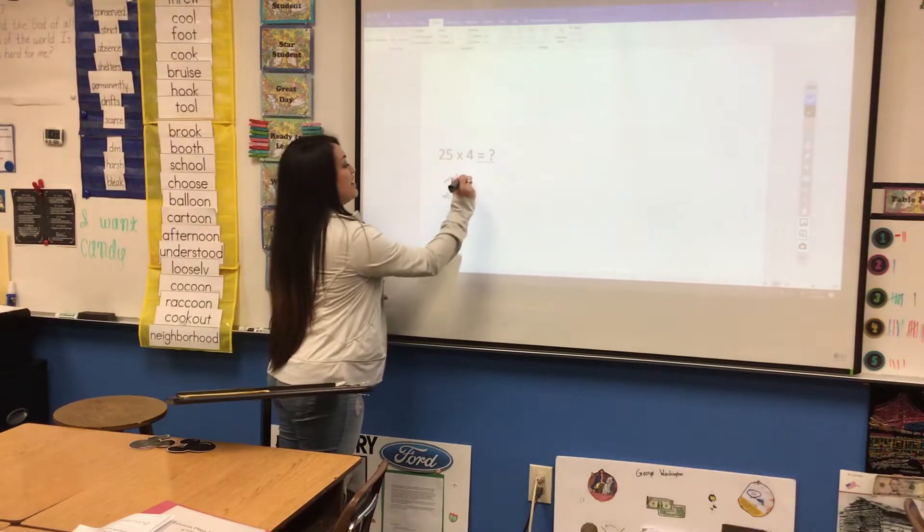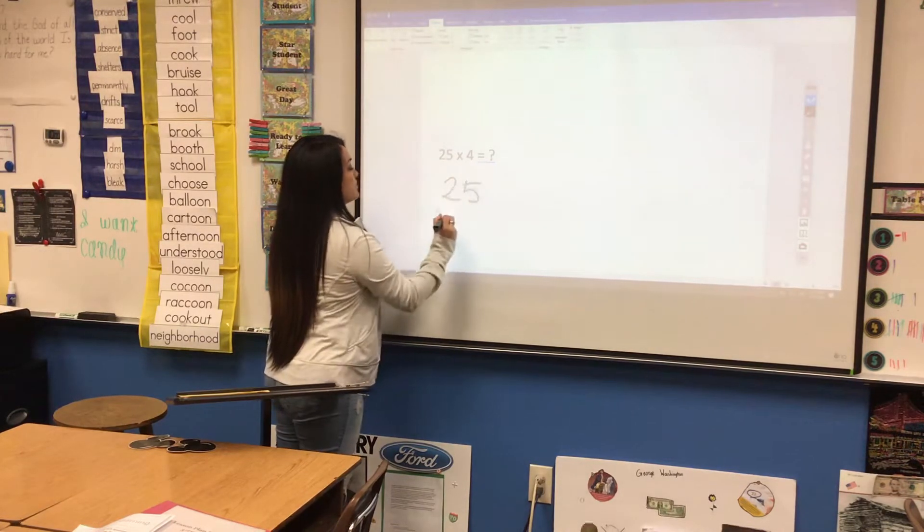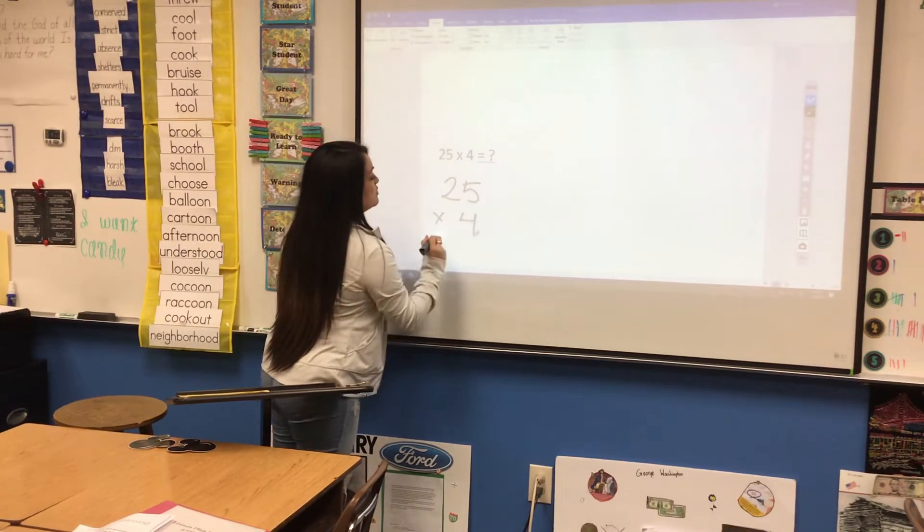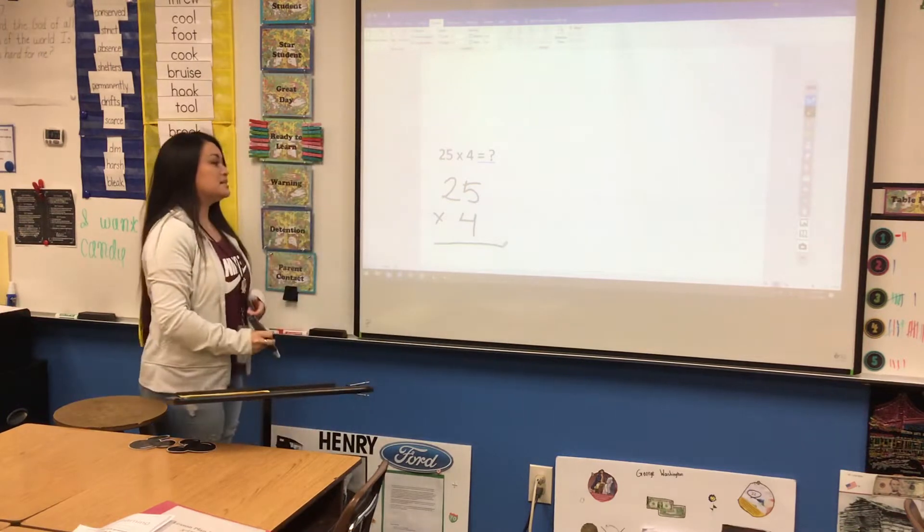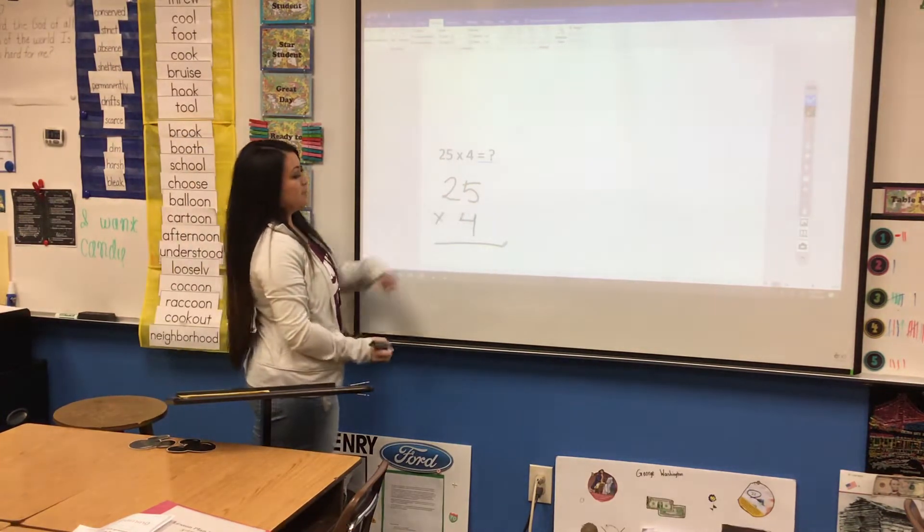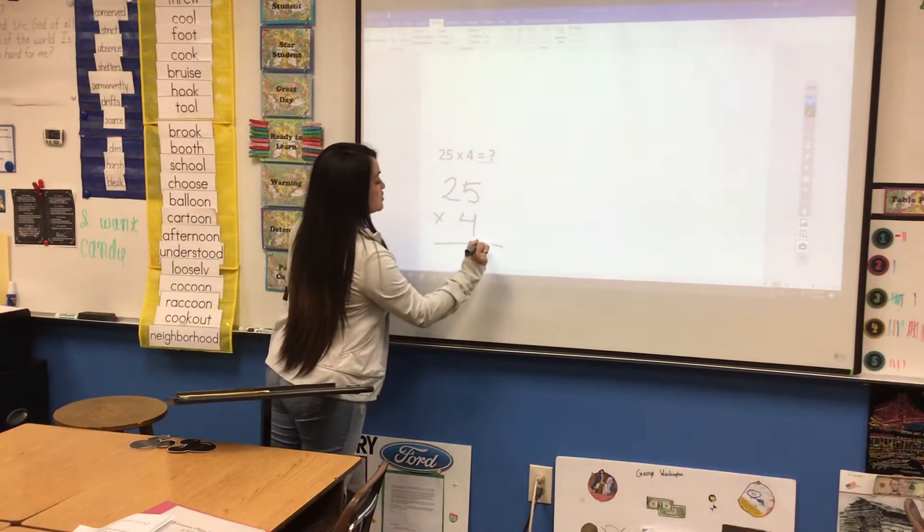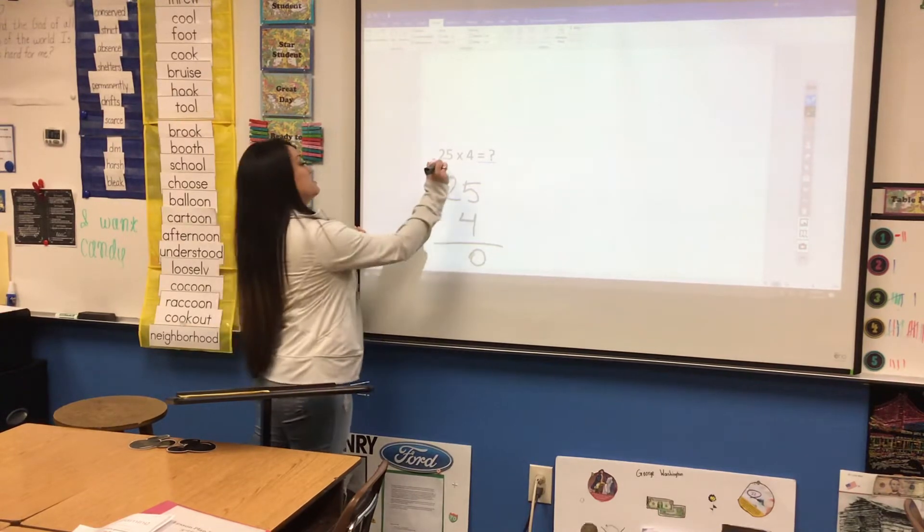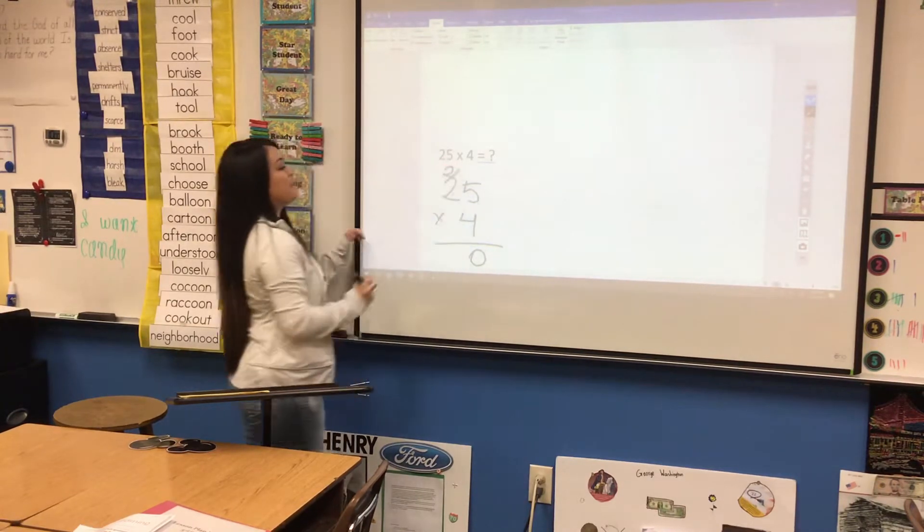So 25 times 4, we're going to stack it just like this. We're going to go 4 times 5, that's 20. Your 0 goes in the 1s place. Your 2 goes up top in the 10s place.